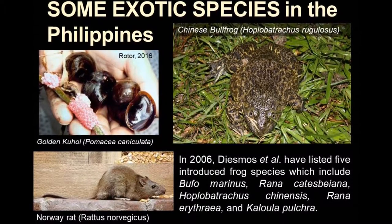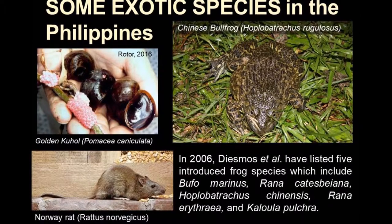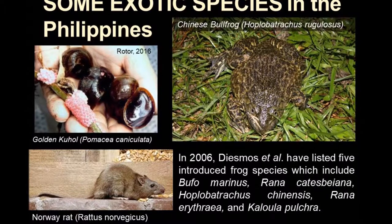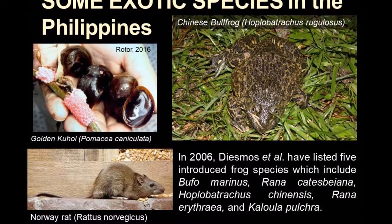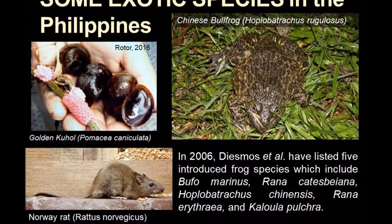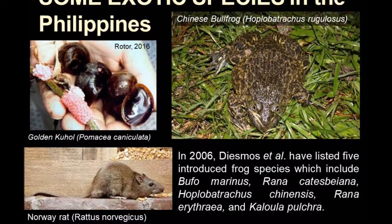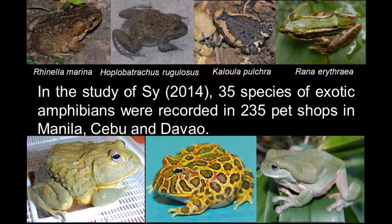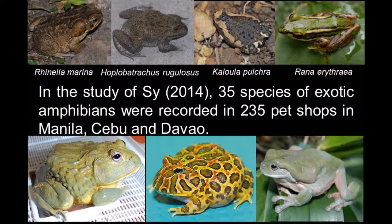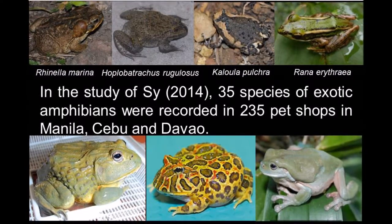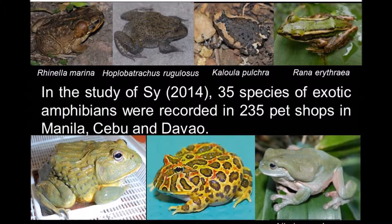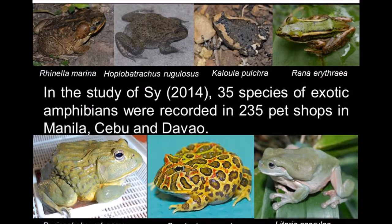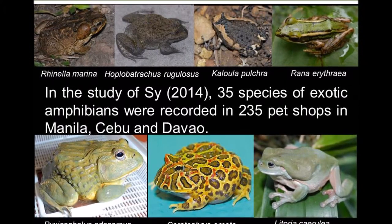Although there are no detailed studies yet that have been conducted to prove it, in Jesmus et al. 2006, they have listed five invasive introduced frog species, which include Hoplobatrachus. In the study of C. 2014, 35 species of exotic amphibians were recorded in 235 pet shops in Manila, Cebu, and Davao. Some of these, such as the four pictures shown above, are already in the wild and recorded by Jesmus et al. 2006 as invasive species.